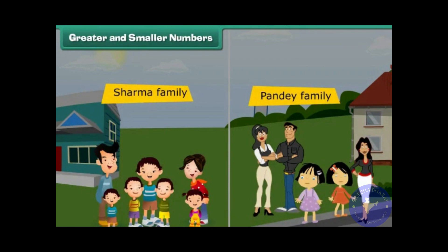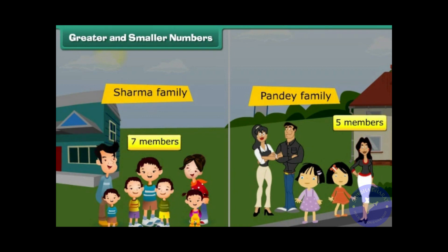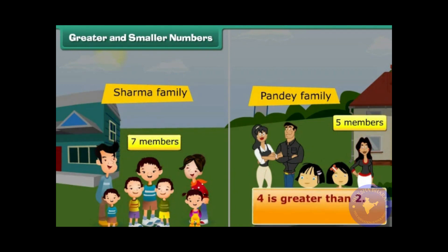Greater and smaller numbers. Recall the Sharma family with seven and Pandey family with five members. Sharma family has more members, which means seven is a greater number than five. Therefore, numbers that come later are greater than the numbers that come before. Four is greater than two. Fifteen is greater than ten.